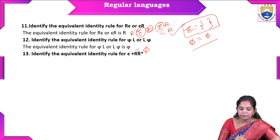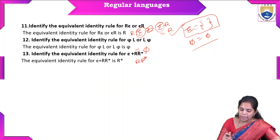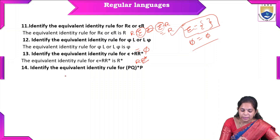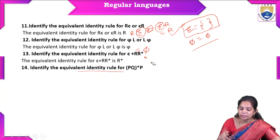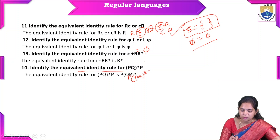Next identity rule: epsilon + R·R* — epsilon plus anything equals that thing. And epsilon + R* = R*. This is the identity rule involving epsilon and Kleene star.